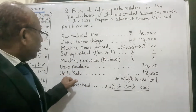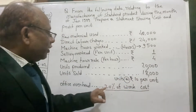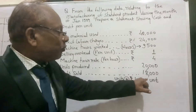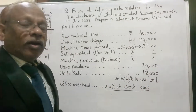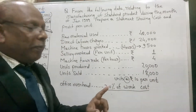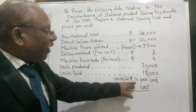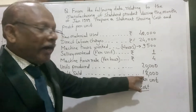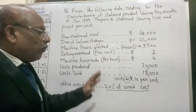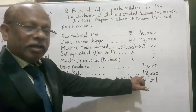Units sold is 18,000 at the rate of 10 rupees per unit. So 10 rupees multiplied by 18,000 units gives us total sales of 1,80,000 rupees. When the information is given about units sold and the rate per unit, you multiply the rate by the number of units sold.